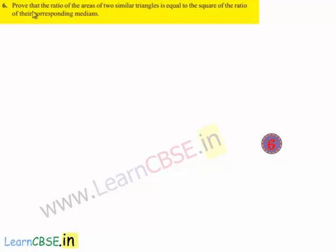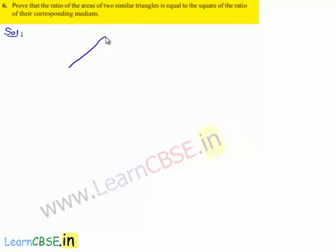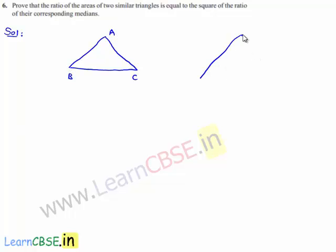Moving on to the sixth question: prove that the ratio of the areas of two similar triangles is equal to the square of the ratio of their corresponding medians. Moving to the solution, let us consider two triangles ABC and triangle DEF which are similar.